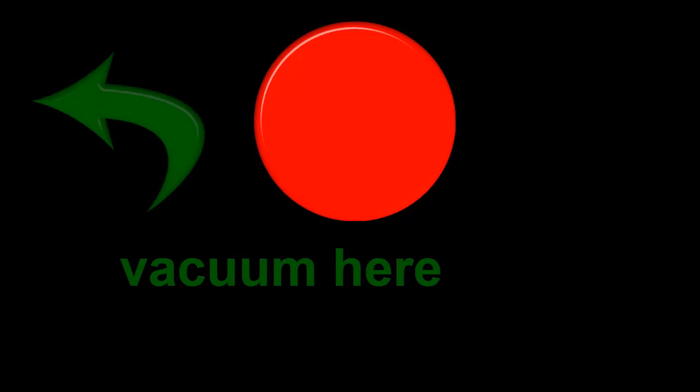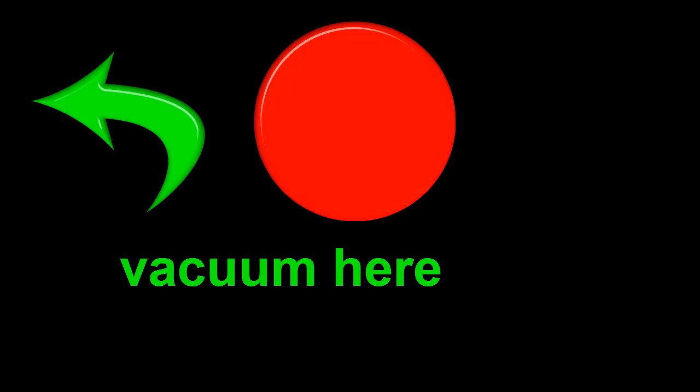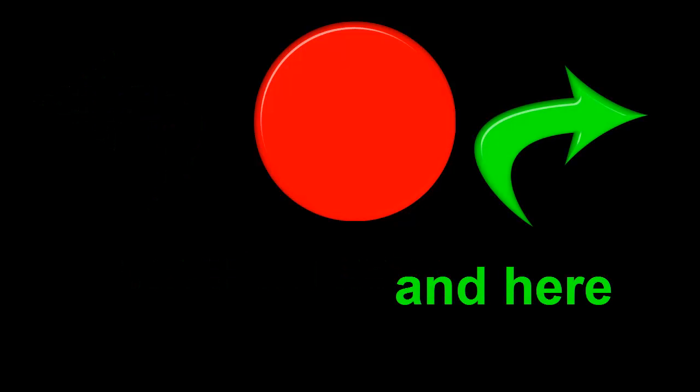What's between the electrons and the nucleus? Nothing. A vacuum. That means that an atom is mostly empty space. Since we're made of atoms, so are we. That's enough to do your head in.